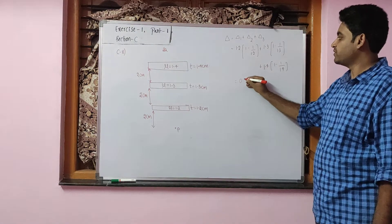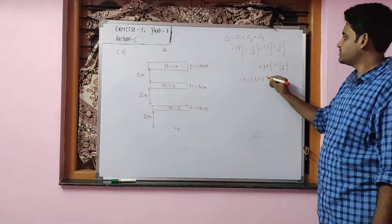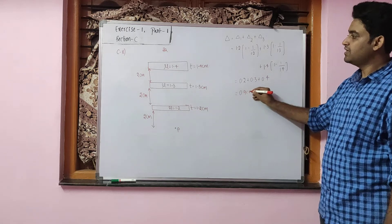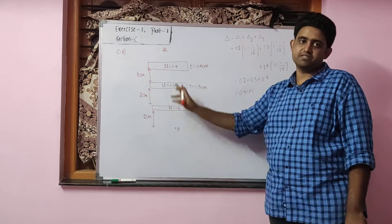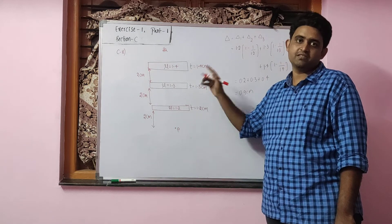Total shift produced will be 0.2 plus 0.3 plus 0.4, which equals 0.9 cm in the direction of traveling rays, which is in upward direction. So total shift will be 0.9 cm in upward direction.